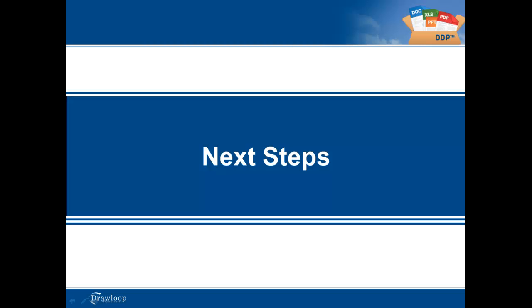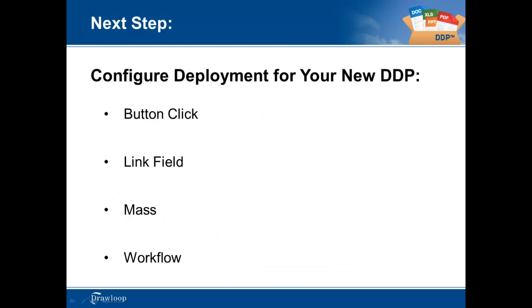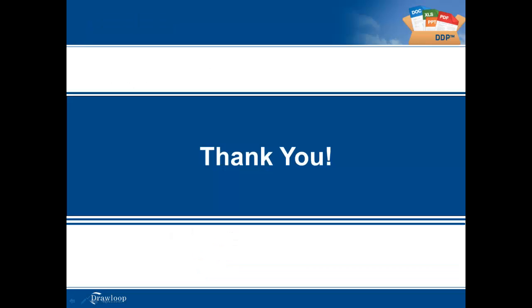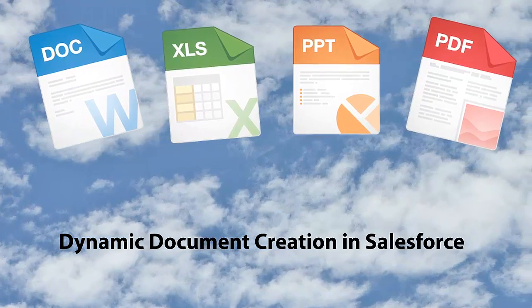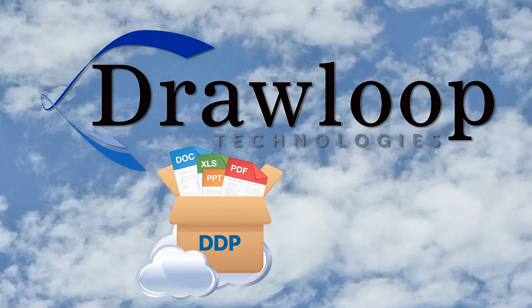That more or less is how a new DDP record is created using DrawLoop's DDP wizard. Now I'd like to provide you with some next steps to getting implemented. First order of action is creating your own DDP record. This DDP record needs to contain its own template files, options for delivery, and insert updates if necessary. Once you've created a new DDP record, you must then configure a deployment for your users — this deployment can be a button click, a link field, mass delivery from a Salesforce list view, or a workflow rule that will automatically request the DDP to generate the document. That concludes this video. Thank you for watching, and please feel free to move on to the next step of your implementation in configuring a deployment.